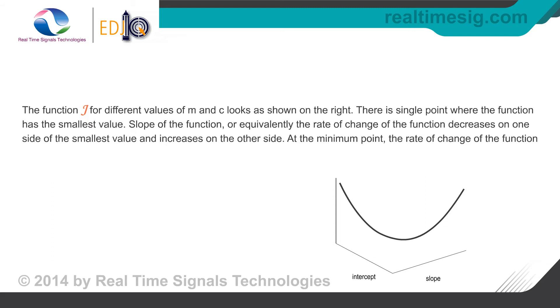At the minimum point, the rate of change of the function becomes zero. Mathematically we can say that the derivative of the function is zero at the minimum location. That is the derivative is zero with respect to both the variables m and c at the location of the minimum.